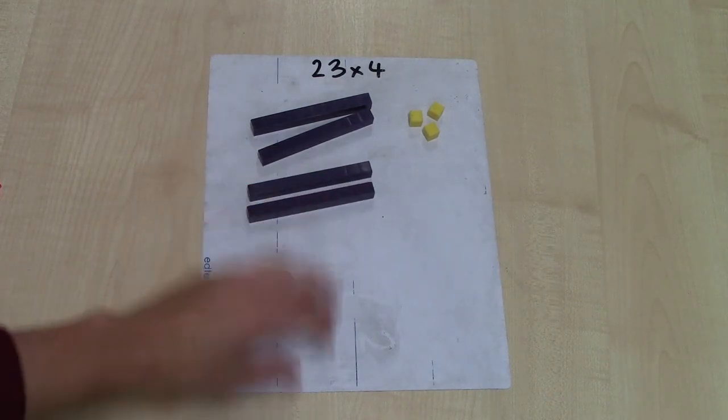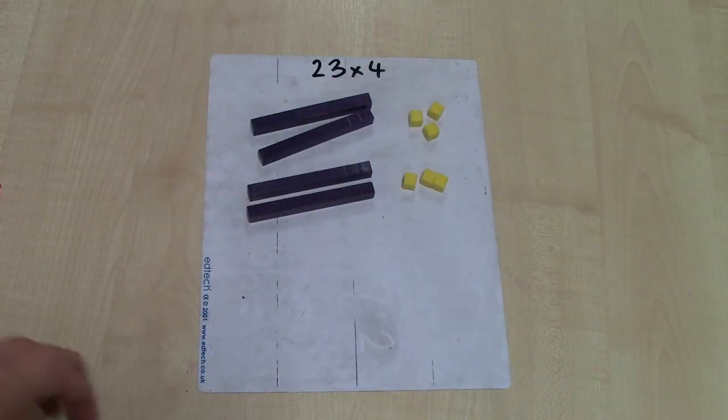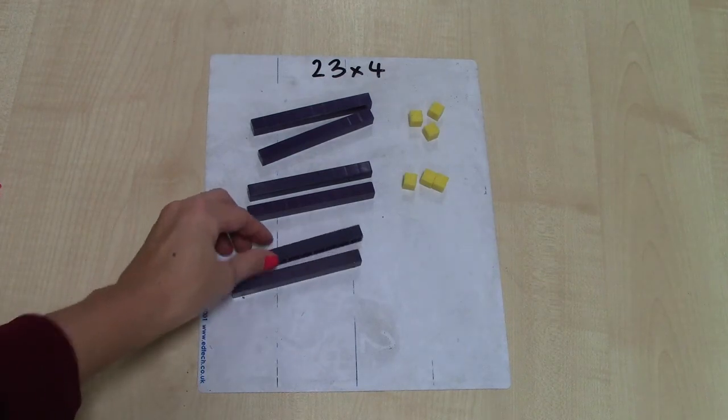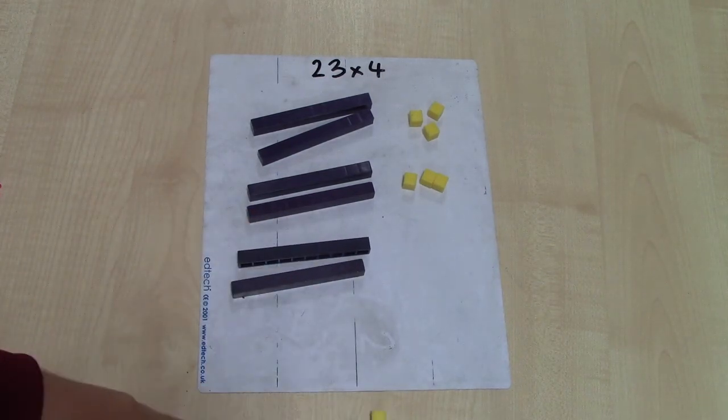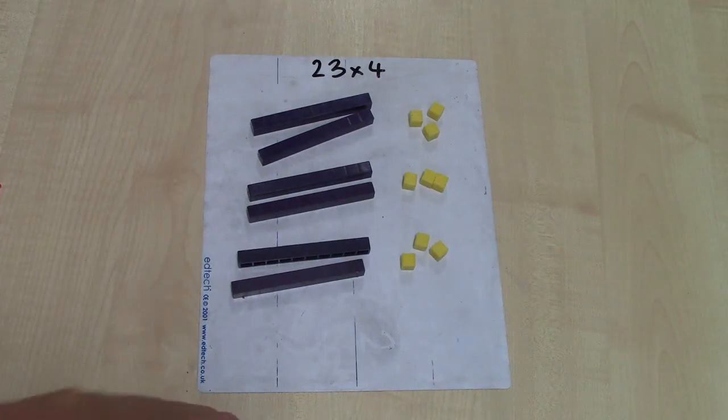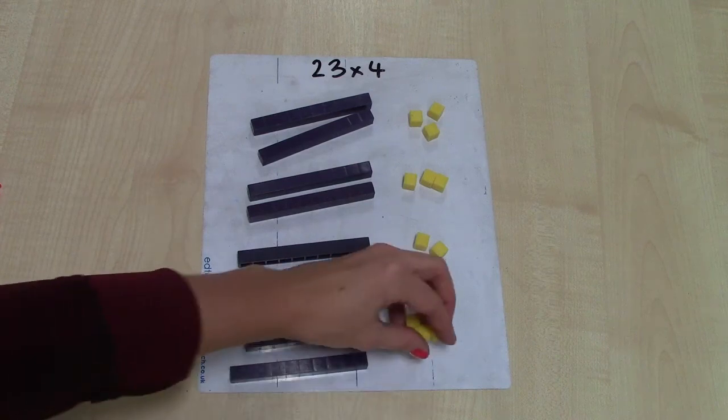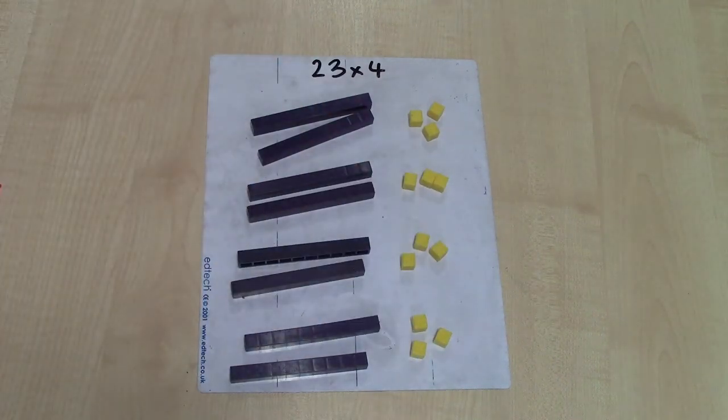Two 10s and three units. And I'm going to make another lot of 23—two 10s and three units—and another group of 23, two 10s and three units.